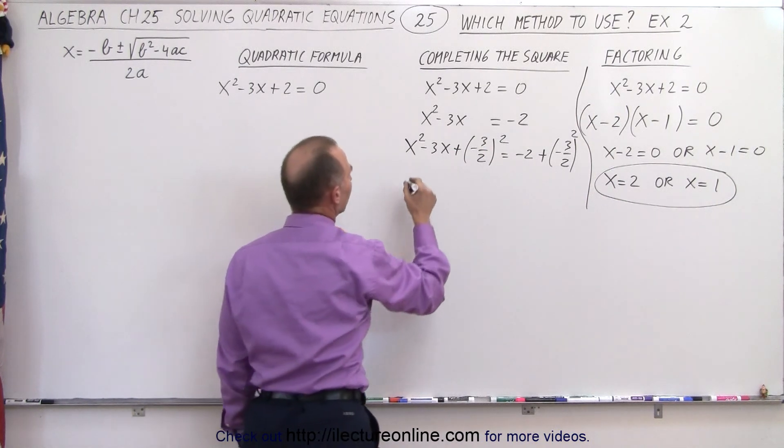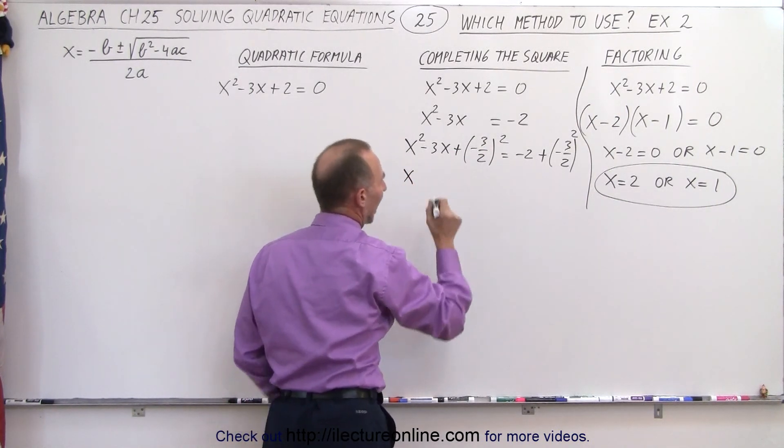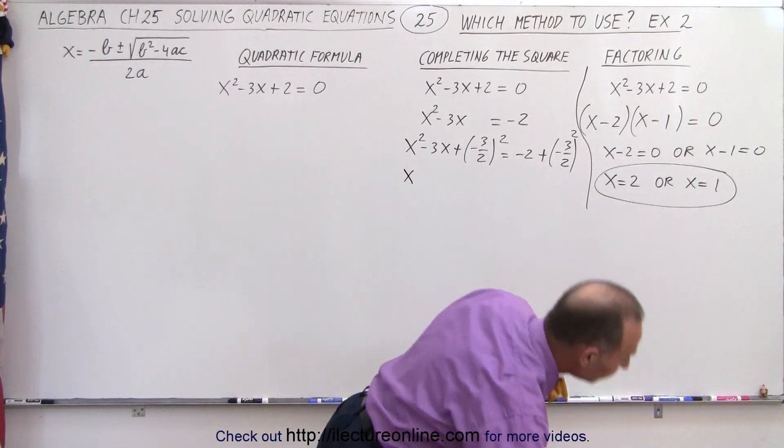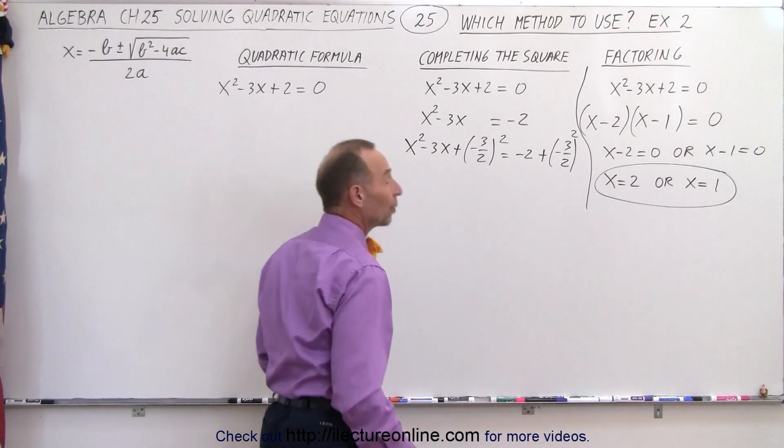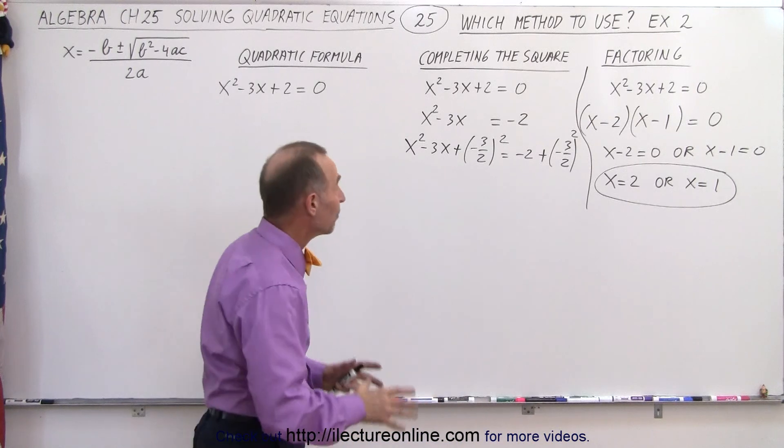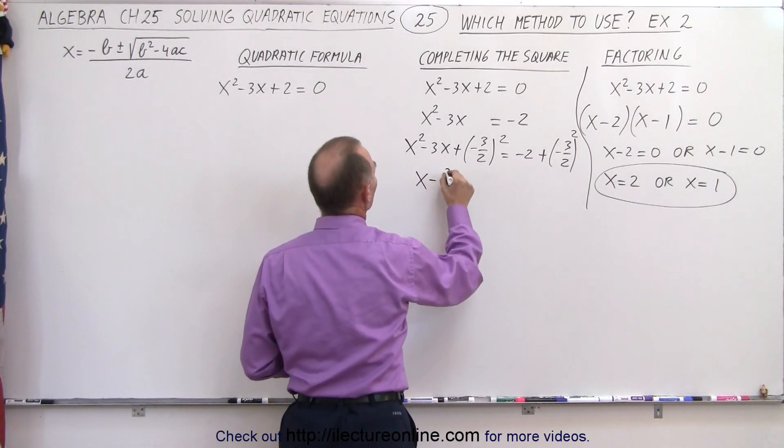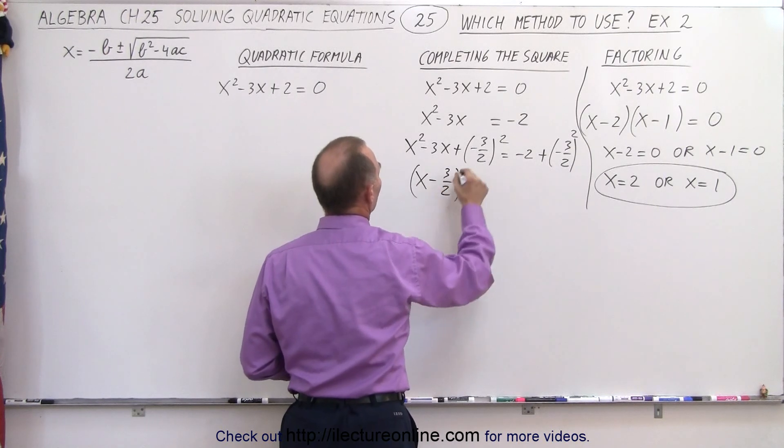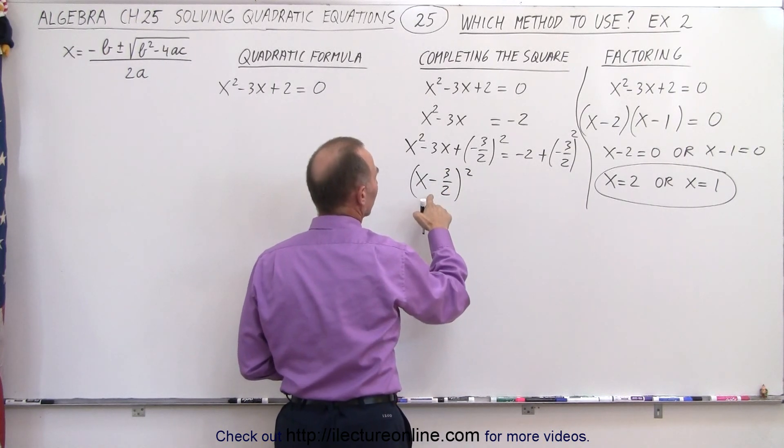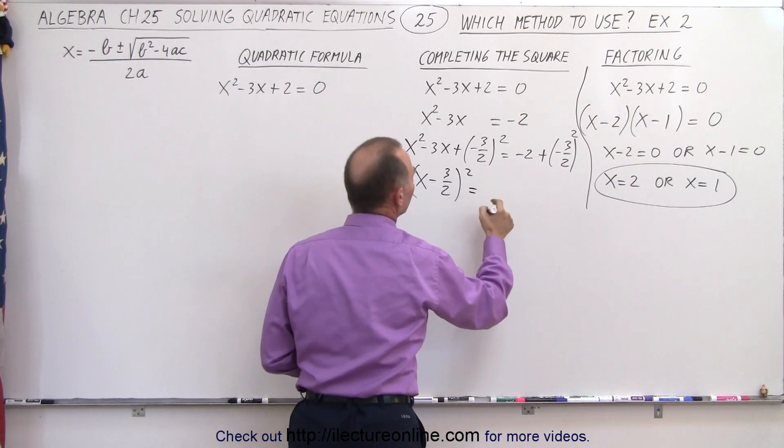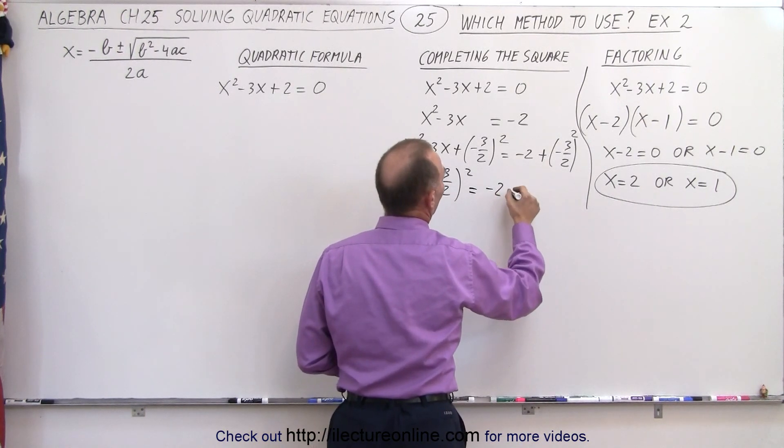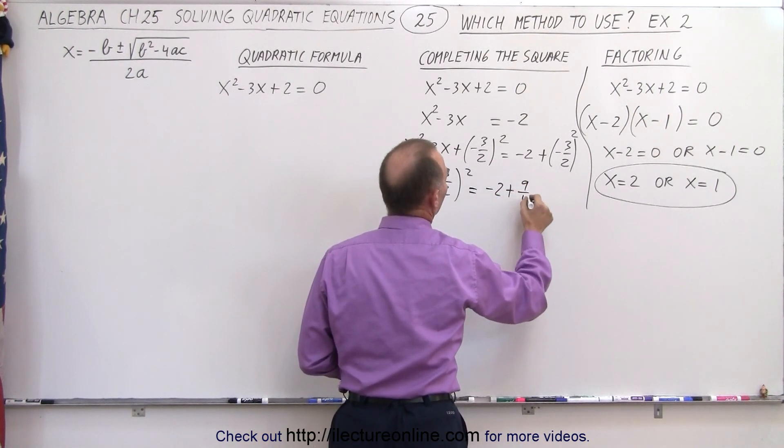All right, so continuing with that, I end up with X squared. Actually, you know what? We can go ahead and factor this right here because now we're dealing with a perfect square. So this can be written as X minus 3 over 2 quantity squared. Since that's a perfect square, it's going to be the square of a binomial is equal to here we have minus 2 plus 9 over 4.